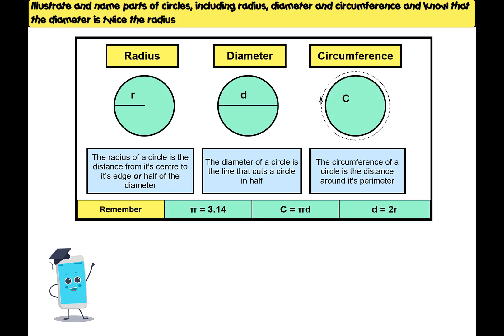The circumference of the circle is basically the perimeter of the circle. It's the distance all the way around the edge. So if you started at one point on the edge and you followed it all the way round till you got back to your starting point, that would be your circumference.